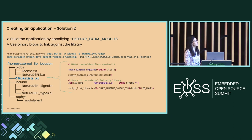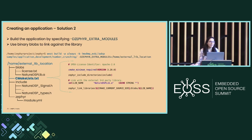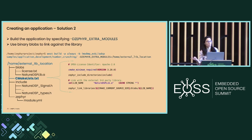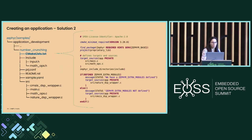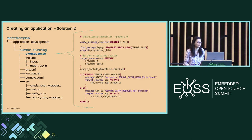In the external module's CMakeLists, we include the directory and link with our external library (now a blob). On the application side, we check whether the ZEPHYR_EXTRA_MODULES variable is defined: if so, the NatureDSP backend is selected; otherwise, CMSIS-DSP is used.